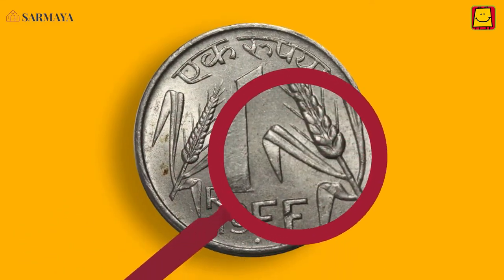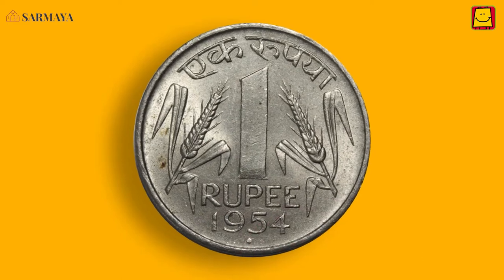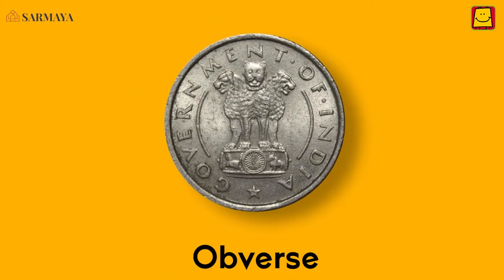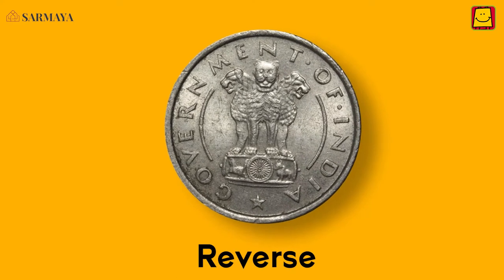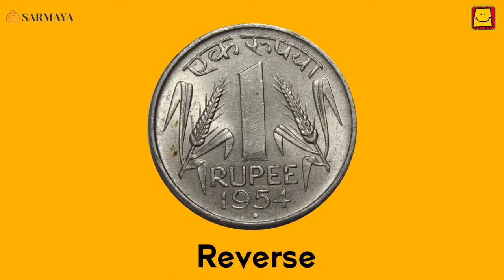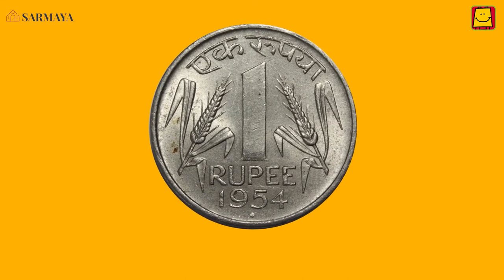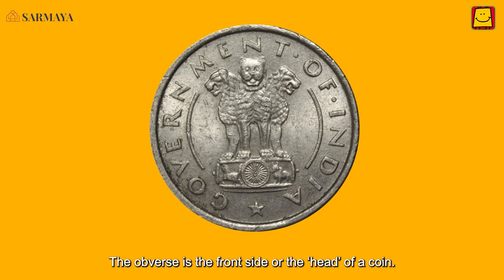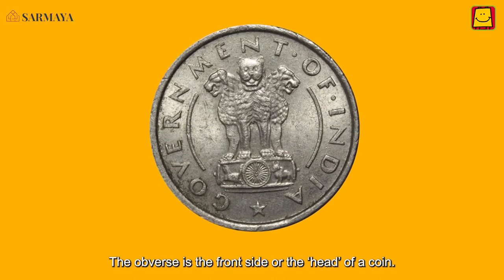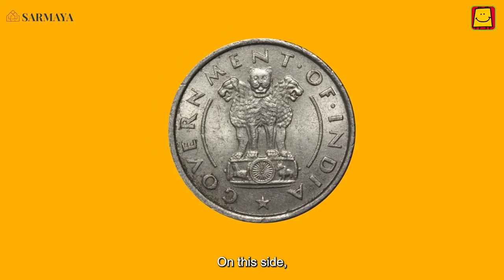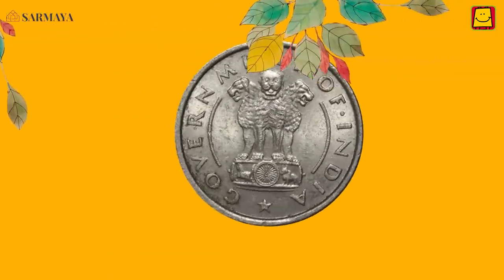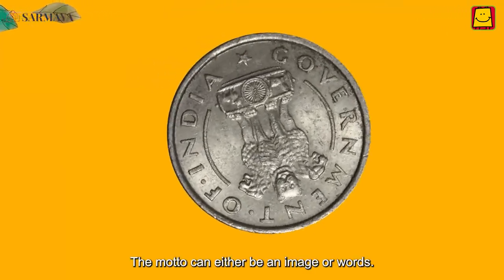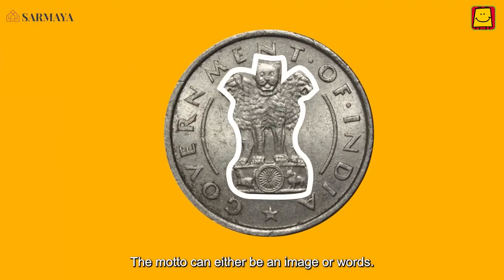The coin has two sides. This is the obverse, what we commonly call heads. And this is the reverse, also called tails. The obverse is the front side or the head of a coin. On this side, the coin usually displays the motto of a kingdom or government. The motto can either be an image or words.